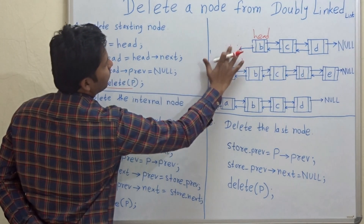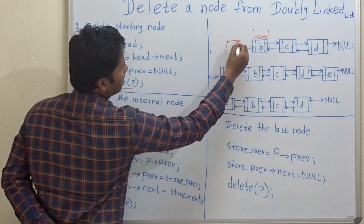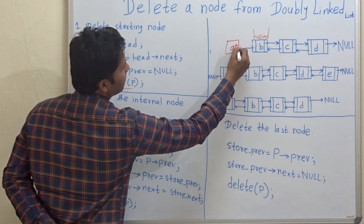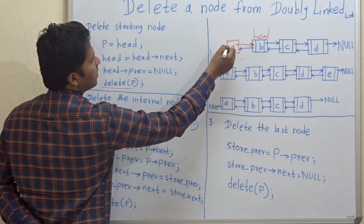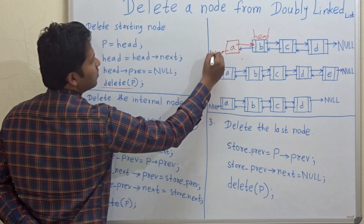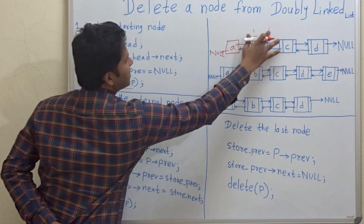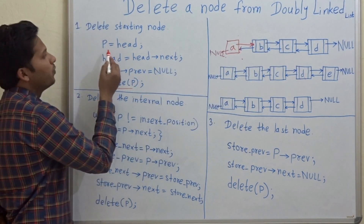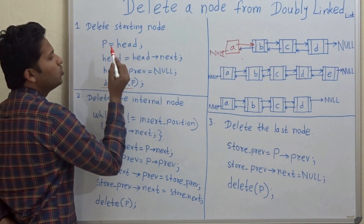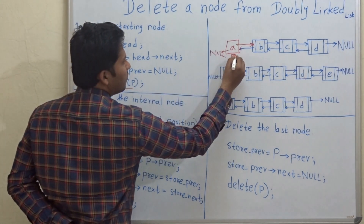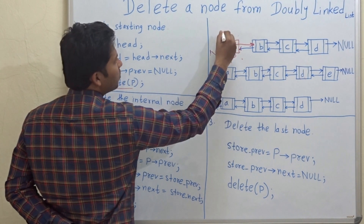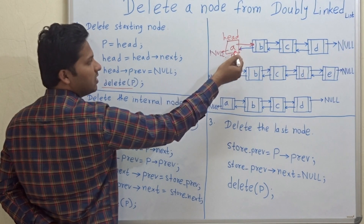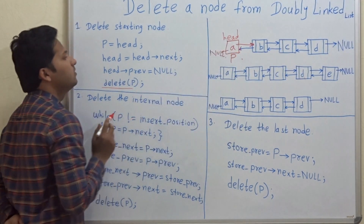Let's see the program for that. I will write node a just for explaining the program — the previous node points to none. This is the original state. Let's see what to do. p is equal to head, so p will point to this head node, which is the starting node of this linked list.